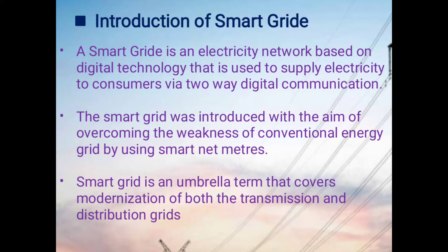A smart grid is an electricity network based on digital technology that is used to supply electricity to consumers via two-way digital communication. Smart grid is a two-way digital communication — not a one-way communication. This means not only the flow of electricity but also the flow of information. This is the two-way data communication.